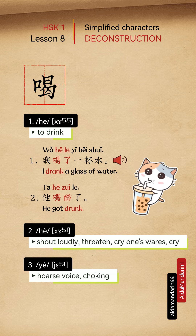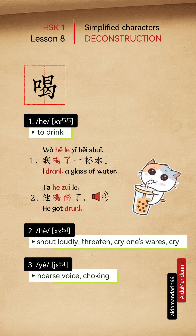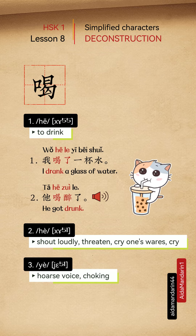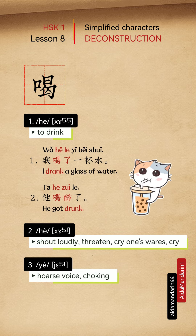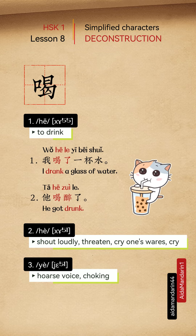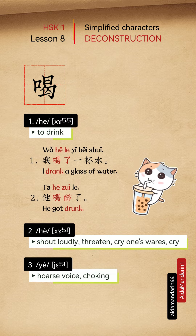For example: 我喝了一杯水 means 'I drink a glass of water,' and 他喝醉了 means 'He got drunk.' In other contexts, it is pronounced 喝 (hè), meaning shouting loudly, threatening, or crying one's wares. 咽喝 means horse voice or choking.